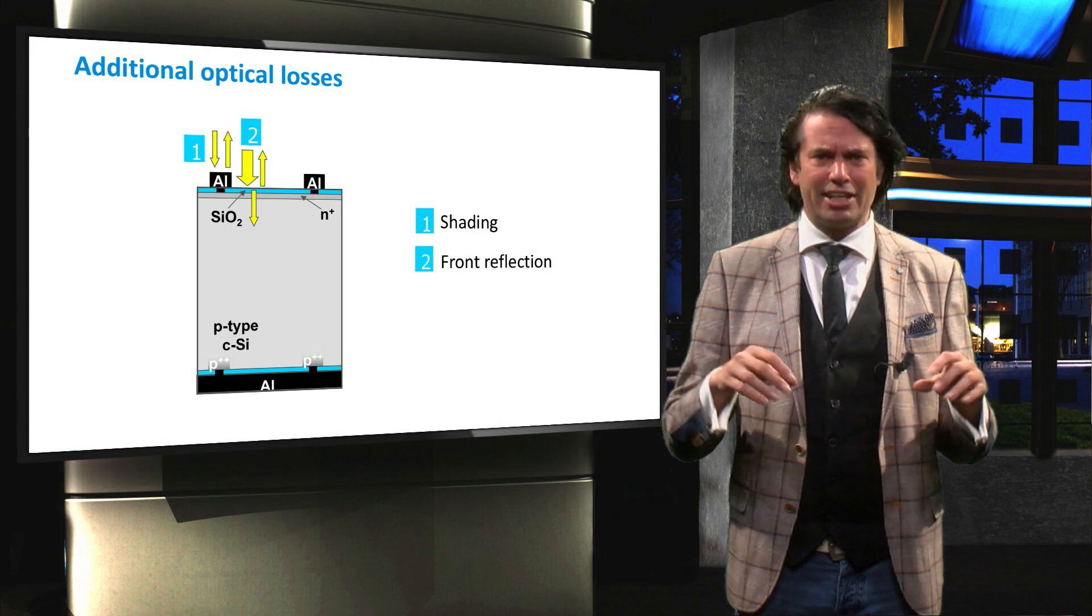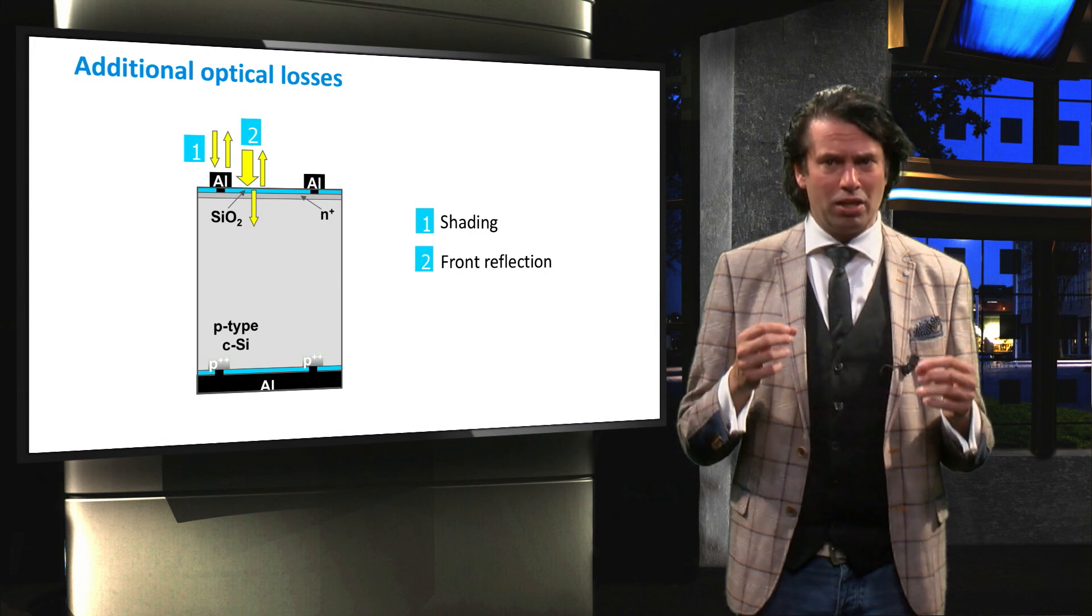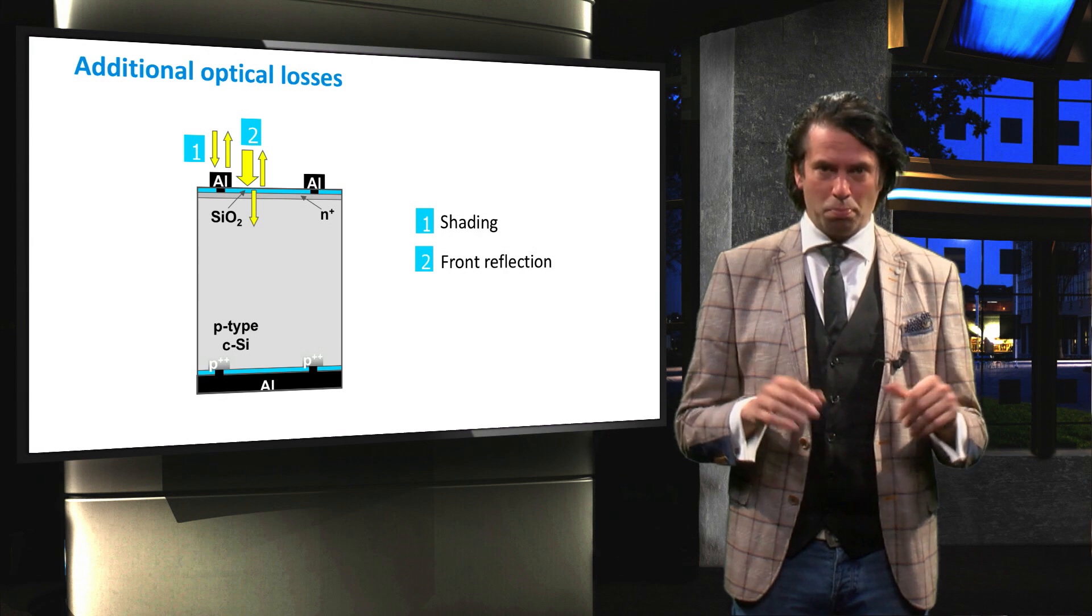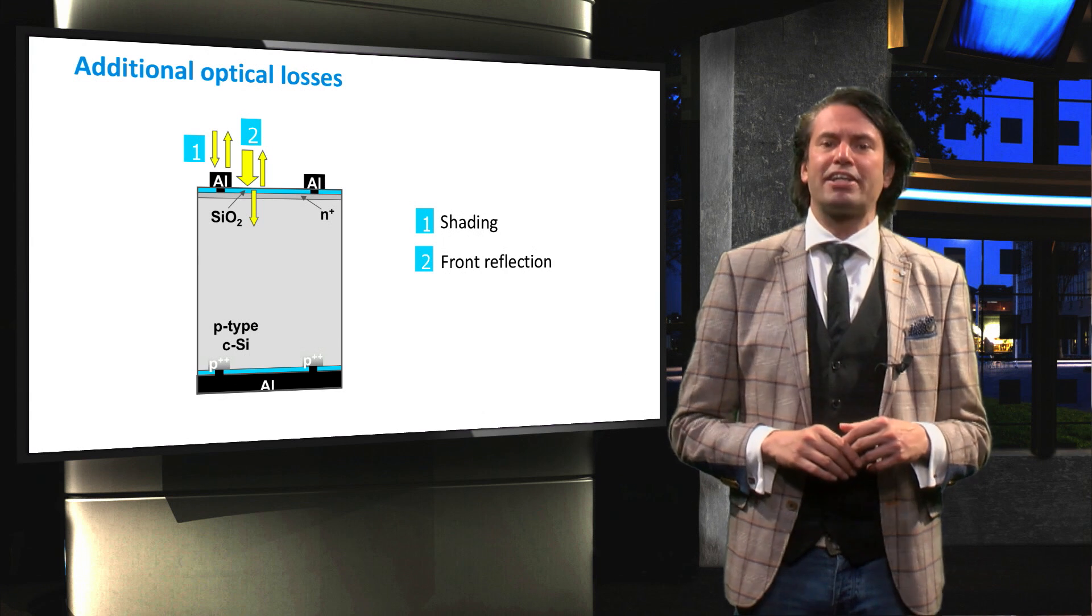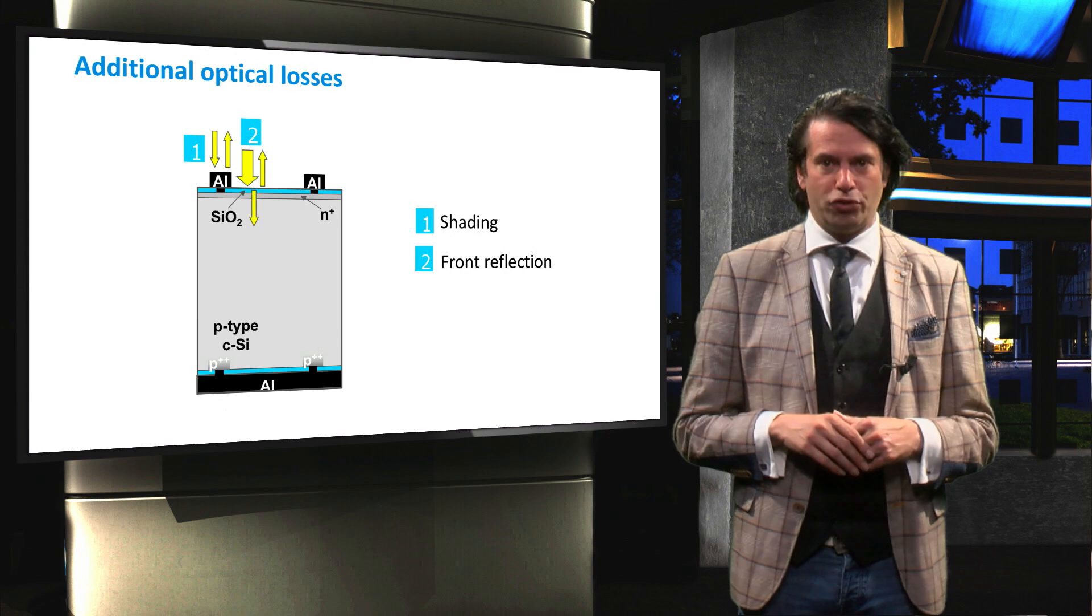Even though silicon dioxide is highly transparent to visible light, it is not completely so. Some light is therefore reflected off the front surface of the solar cell.